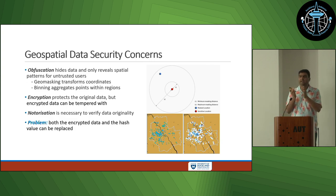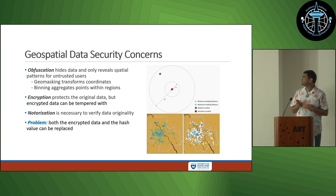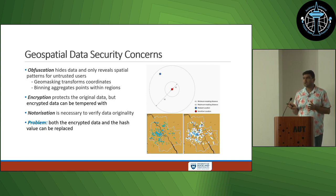Another approach is to aggregate the data. We can use hexagonal binning to show the density of points, and that approach is good to obfuscate the data.